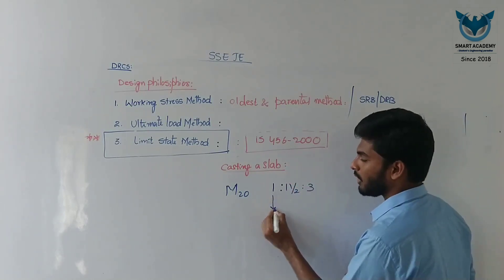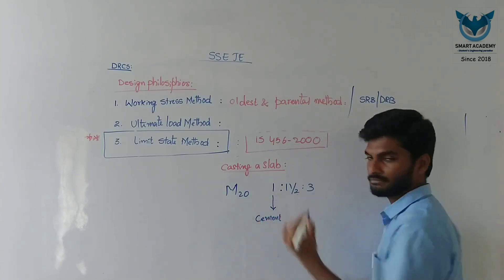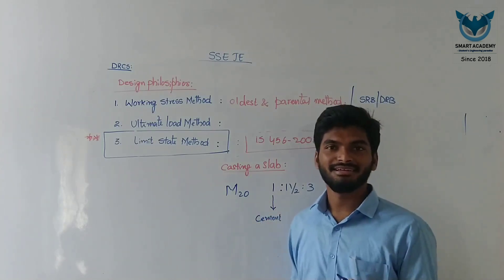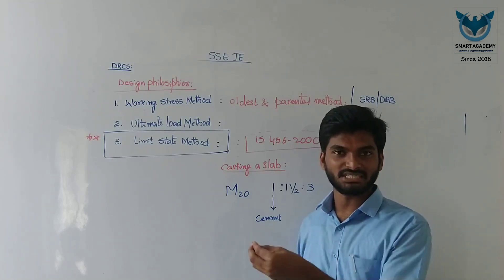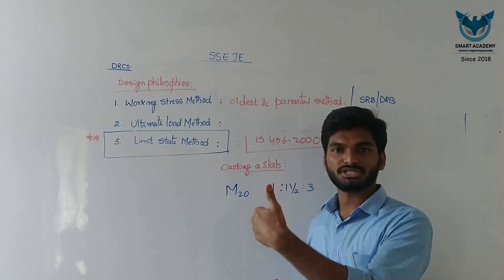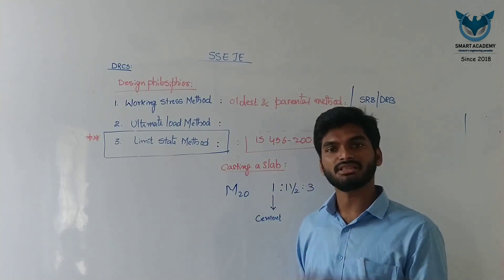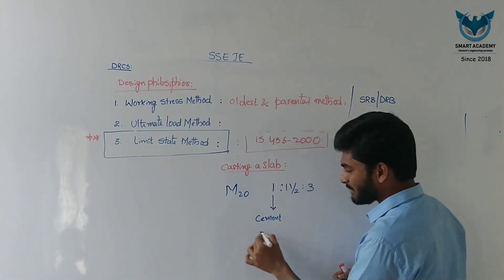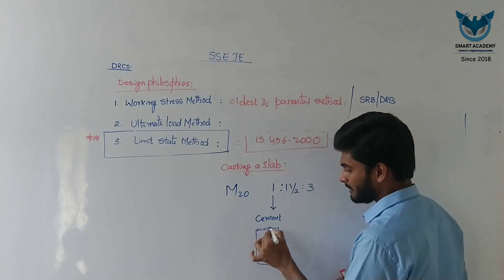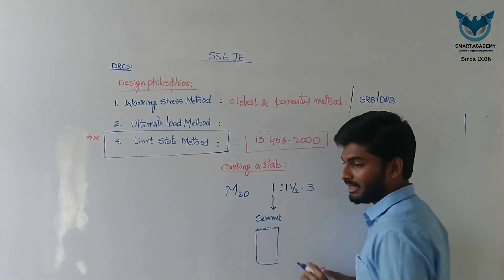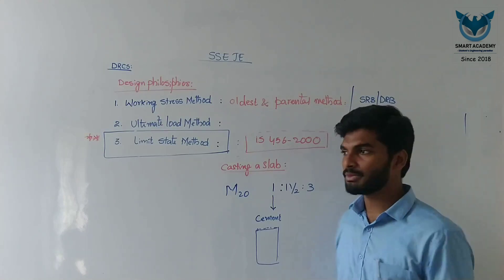In this mix ratio, the first component — '1' — belongs to cement. We know about cement: we buy it from production companies through dealer shops, purchasing it in bags.